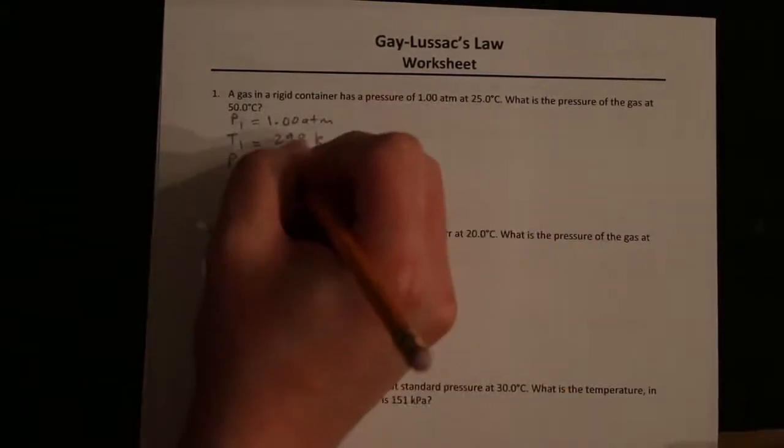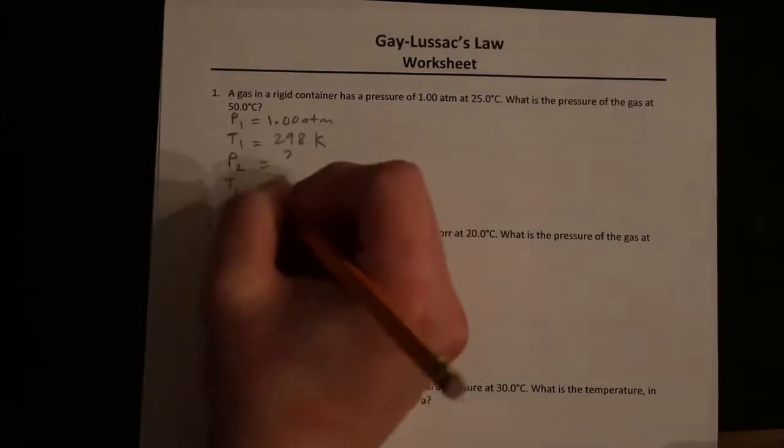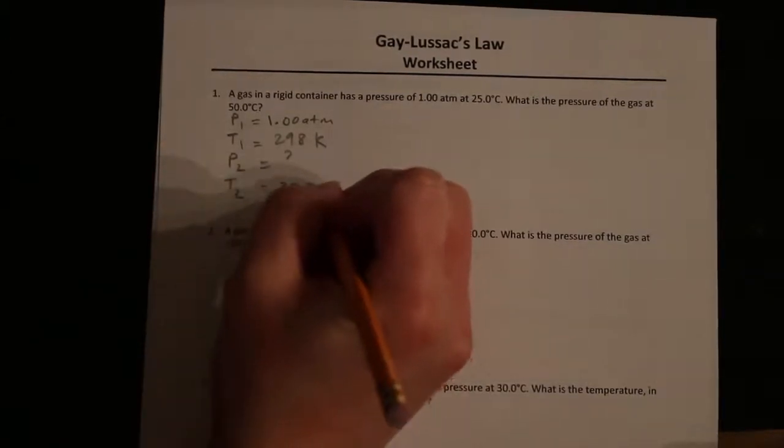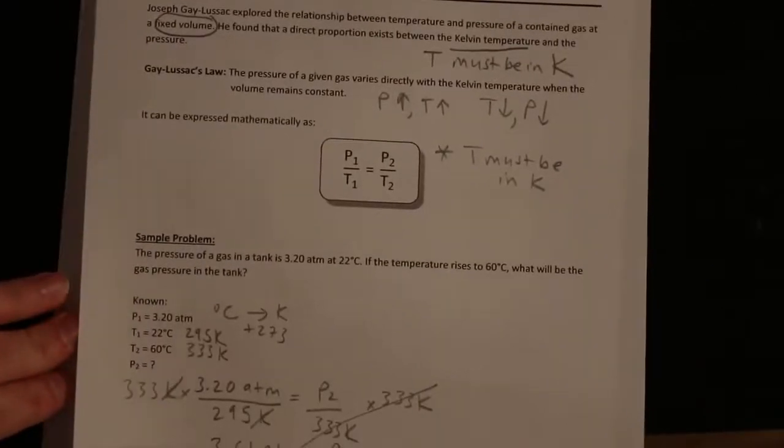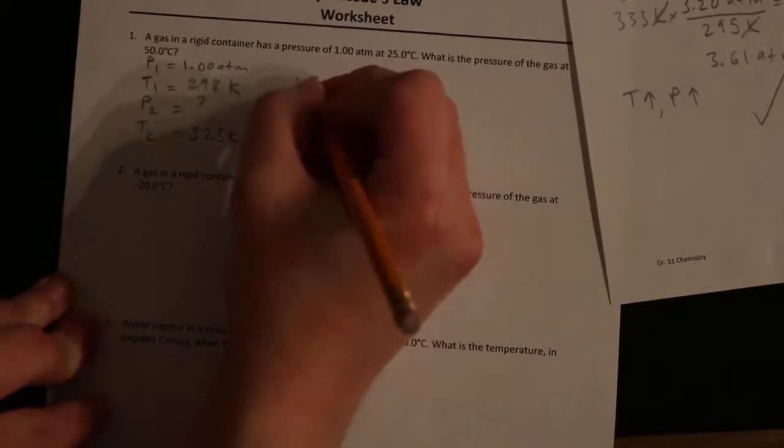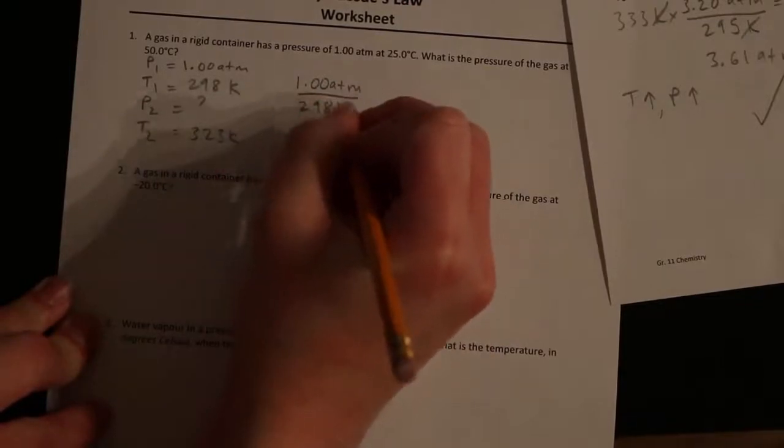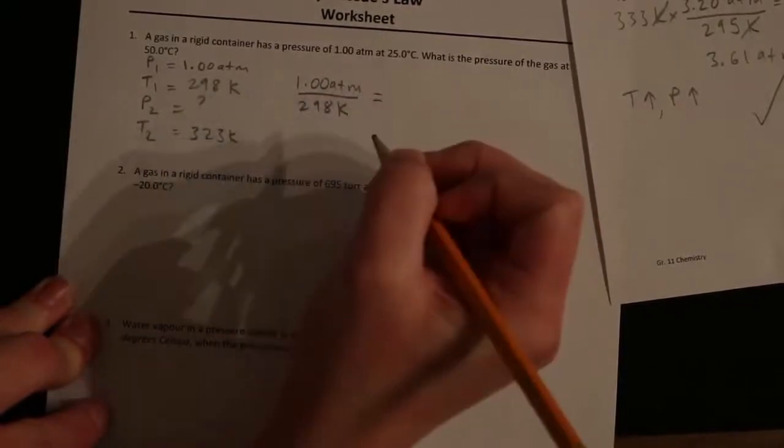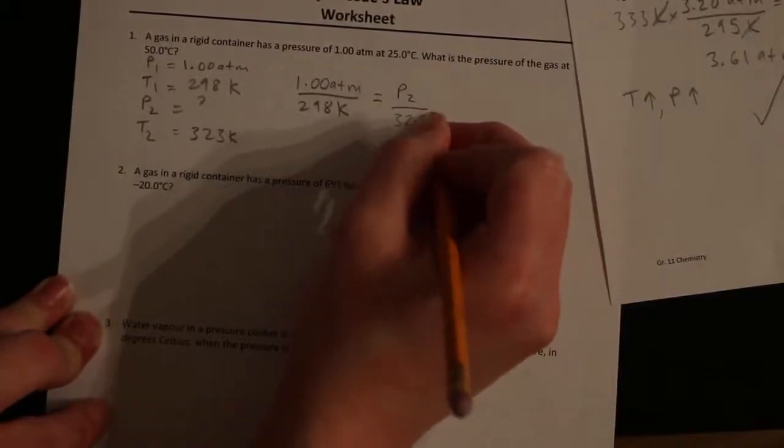P2 is what we're trying to find. Temperature 2 is 50 Celsius. So 50 plus 273 equals 323 Kelvin. Now let's set up our proportion. P1 over T1: that's 1.00 atm divided by 298 Kelvin equals P2, which we're trying to find, divided by 323 Kelvin.